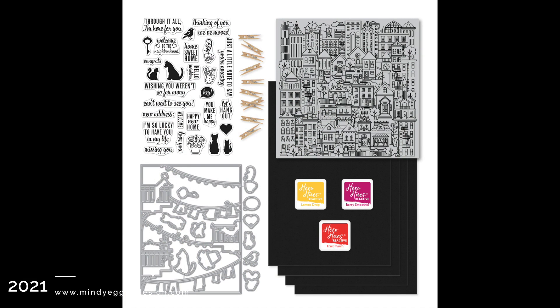You will be receiving a 4x6 clear stamp, 11 coordinating frame cuts, a fancy die cover plate measuring 4.25x5.5, a city cling stamp that is 6x6, four sheets of black cardstock measuring 5.5x8.5, three reactive ink cubes in berry smoothie, fruit punch, and lemon drop, and also 10 clothespins.